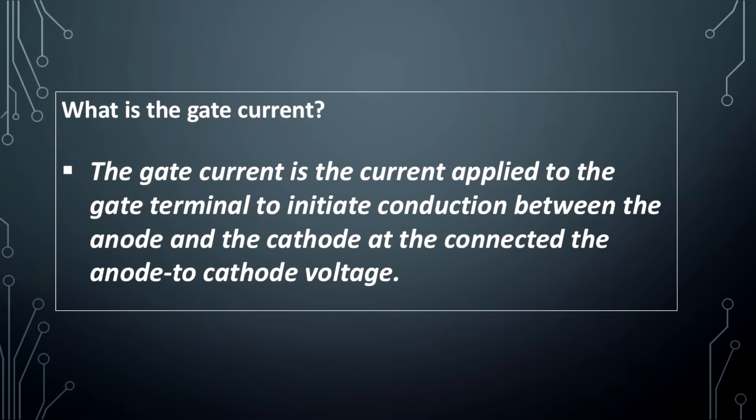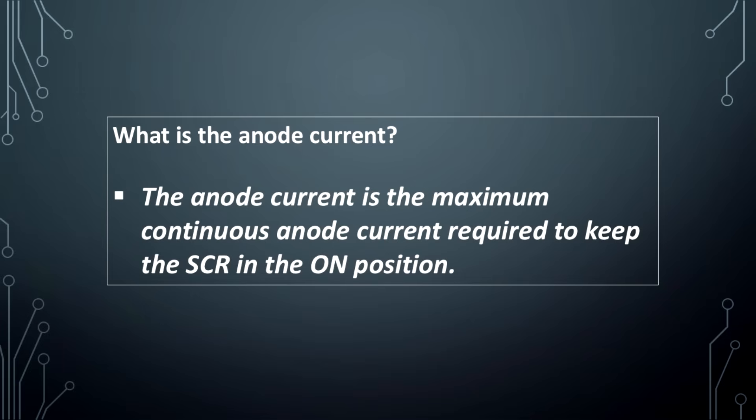What is the gate current? The gate current is the current applied to the gate terminal to initiate conduction between the anode and the cathode at a given anode-to-cathode voltage. What is the anode current? The anode current is the maximum continuous anode current required to keep the SCR in the on state.